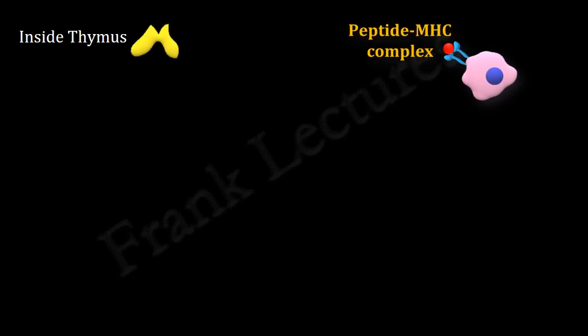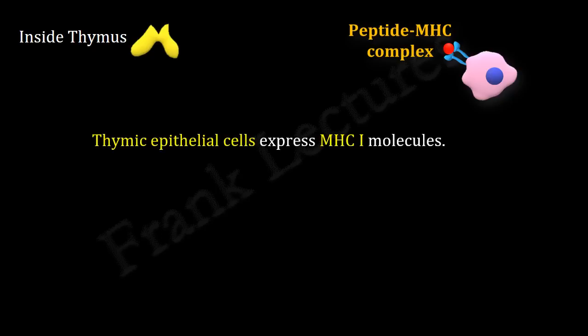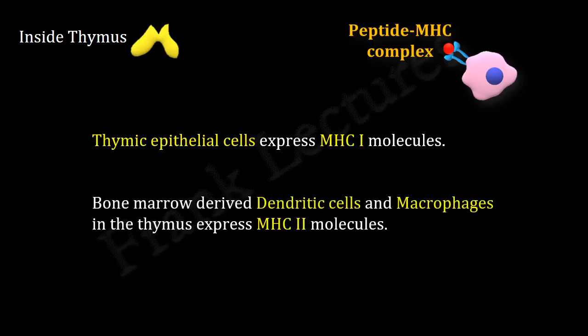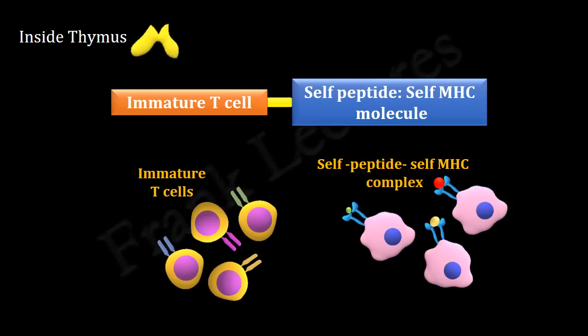Recall that all nucleated cells express MHC class 1 molecules, and under normal conditions these MHC class 1 molecules display self-antigens. So thymic epithelial cells will also express MHC class 1 molecules. Also in the thymus, bone marrow-derived dendritic cells and macrophages are found. These antigen-presenting cells present peptide antigens in complex with MHC class 2 molecules. These peptide antigens are derived from all the proteins made by these cells, and they also display peptide antigens derived from soluble proteins taken up from extracellular fluid. So what we understand here is that in the thymus, the immature T-cells will mostly interact with self-antigens in complex with self-MHC molecules.